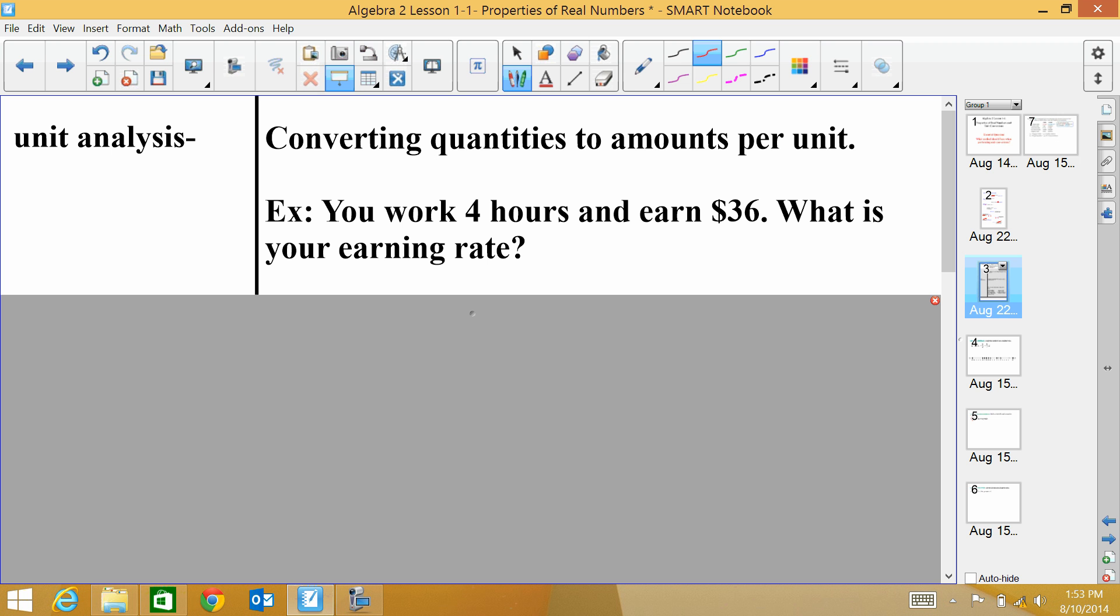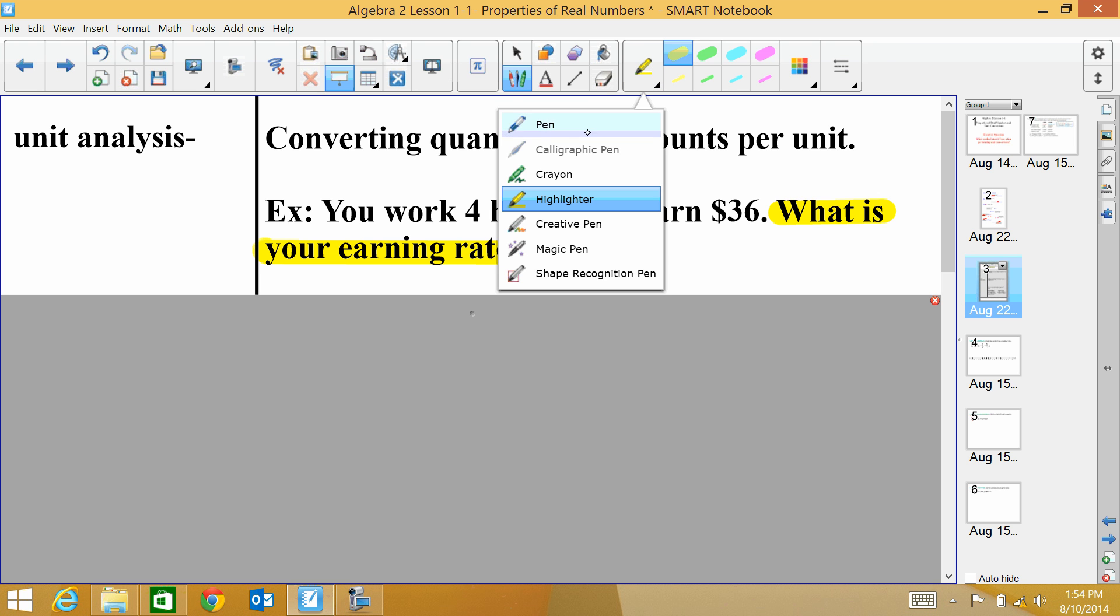Now let's get into some unit analysis and unit conversions. This is the actual part that you're going to have to work out today. So when we're doing unit analysis, we're converting quantities to amounts per unit. So like miles per hour, dollars per hour, things like that. So for example, if you work 4 hours, you earn $36. What is your earning rate? Now whenever I do word problems, I always try to take a step back and look at the problems and pick out the important parts. So first the question is saying, what is your earning rate? So that means that I'm trying to find out how much money I'm making.